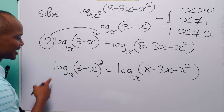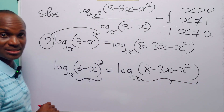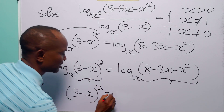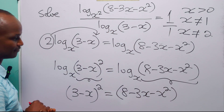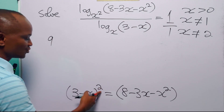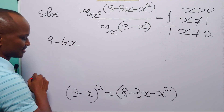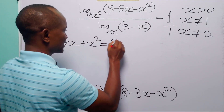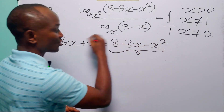Since log base x of one quantity equals log base x of another quantity, the arguments must be equal. So (3 minus x)² equals 8 minus 3x minus x². Expanding the left-hand side: 3² is 9, 2 times 3 times (minus x) gives minus 6x, and (minus x)² gives plus x². So we have 9 minus 6x plus x² equals 8 minus 3x minus x².